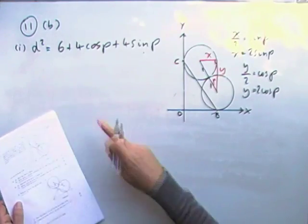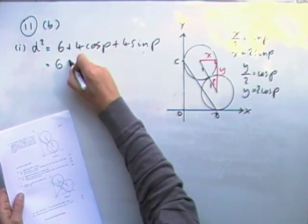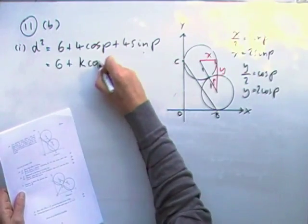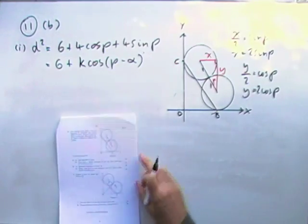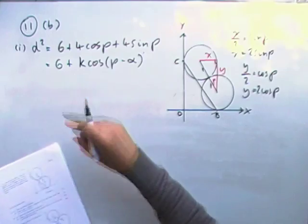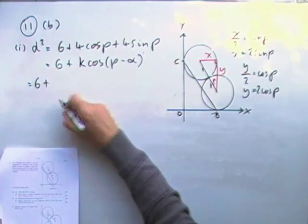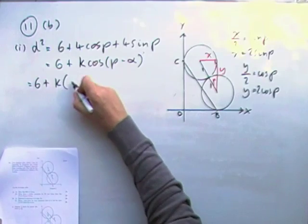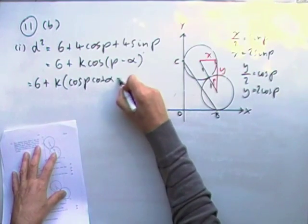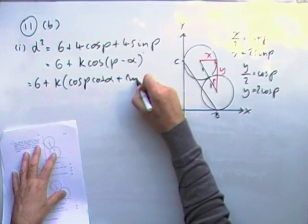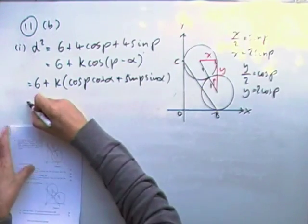Part B. Express D squared, which I've rewritten here, in the form of 6 plus K cos P minus alpha. Right. Well, that's just the wave function, isn't it? Apart from having that additional 6. Well, that 6 is just a constant, it's going to sit at the side. So I'll expand that. That'll be K times cos P cos alpha plus sin P sin alpha.